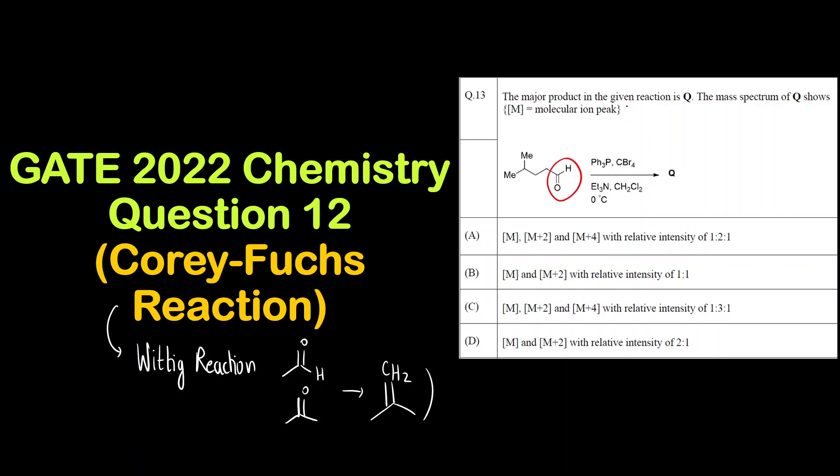Okay, similarly here also we will convert this aldehyde to alkene. The question is the major product in the given reaction is Q. Q is the major product, the mass spectrum of Q shows... It is a combination of name reaction as well as mass spectrum. First we have to find out the product Q and then we have to find out the relative intensity of the M, M plus 2 and M plus 4 peak. Okay so let us start.